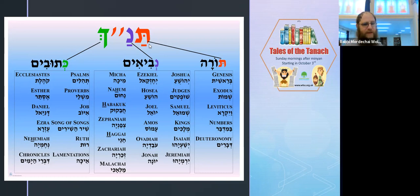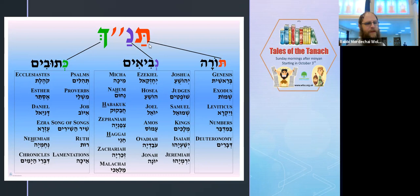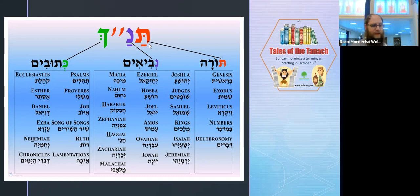The 12 minor prophets are: Hosea, Joel, Amos, Avadia, Jonah, Micha, Nachum, Havakuk, Tsefania, Haggai, Zechariah, and Malachi. They're all in the 12.